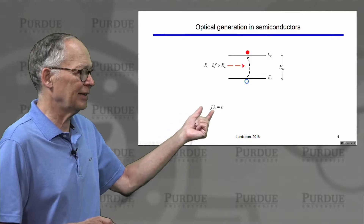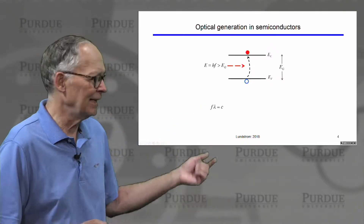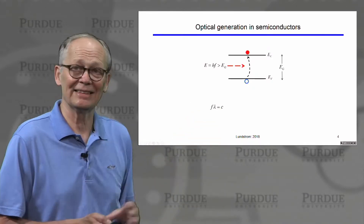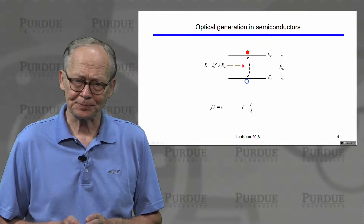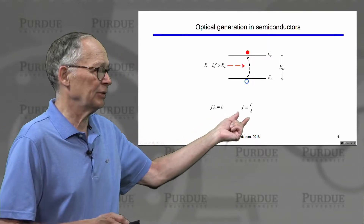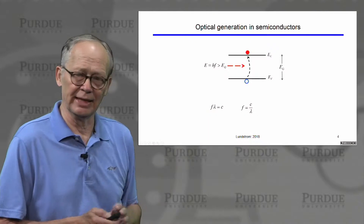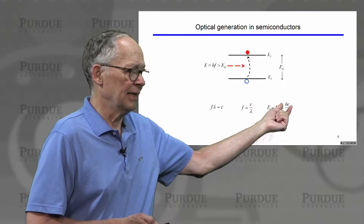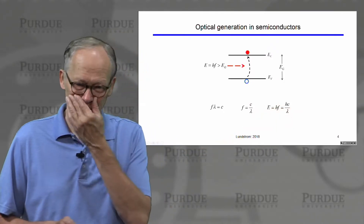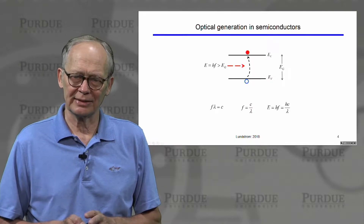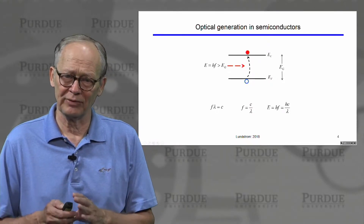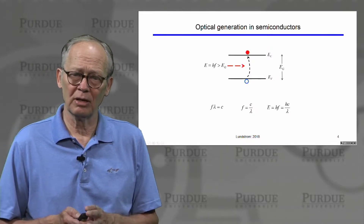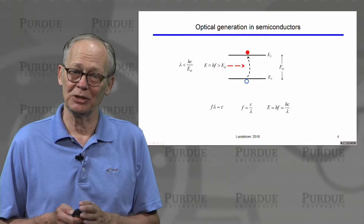Just to remind you: frequency times wavelength equals the speed of light c, so we can express frequency as c divided by wavelength. Multiplying by Planck's constant, we can express the photon energy as hc divided by wavelength. This is just an equivalent way of expressing energy in terms of frequency or wavelength. So the frequency has to be high enough to create an electron-hole pair — or alternatively, the wavelength has to be short enough.